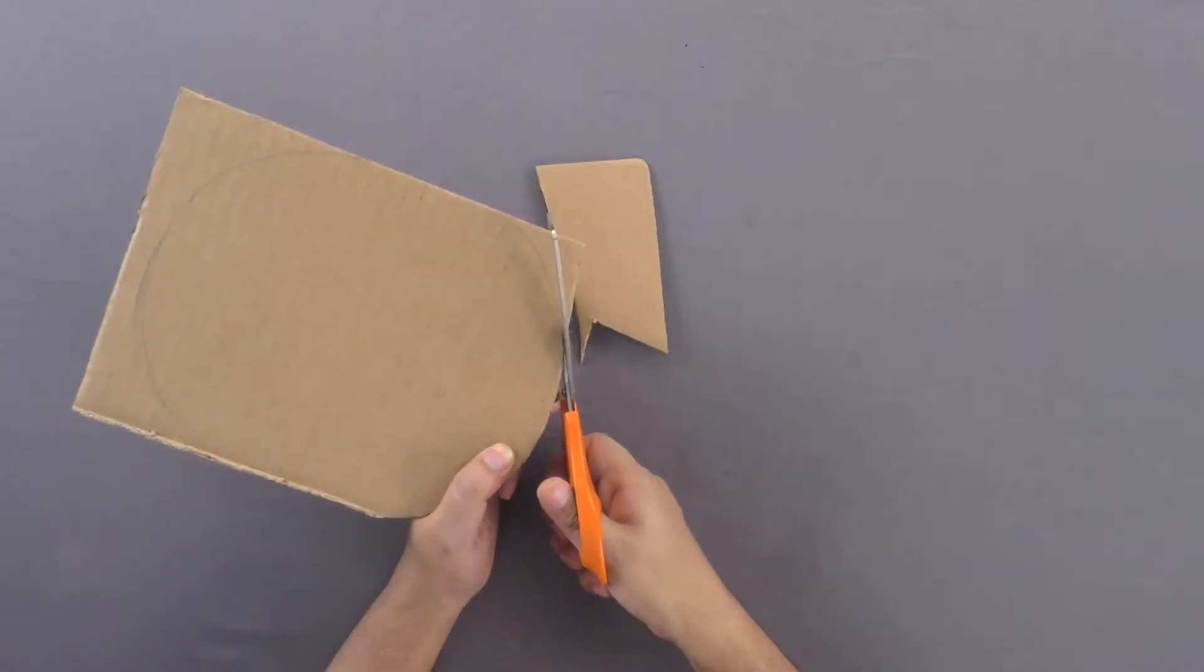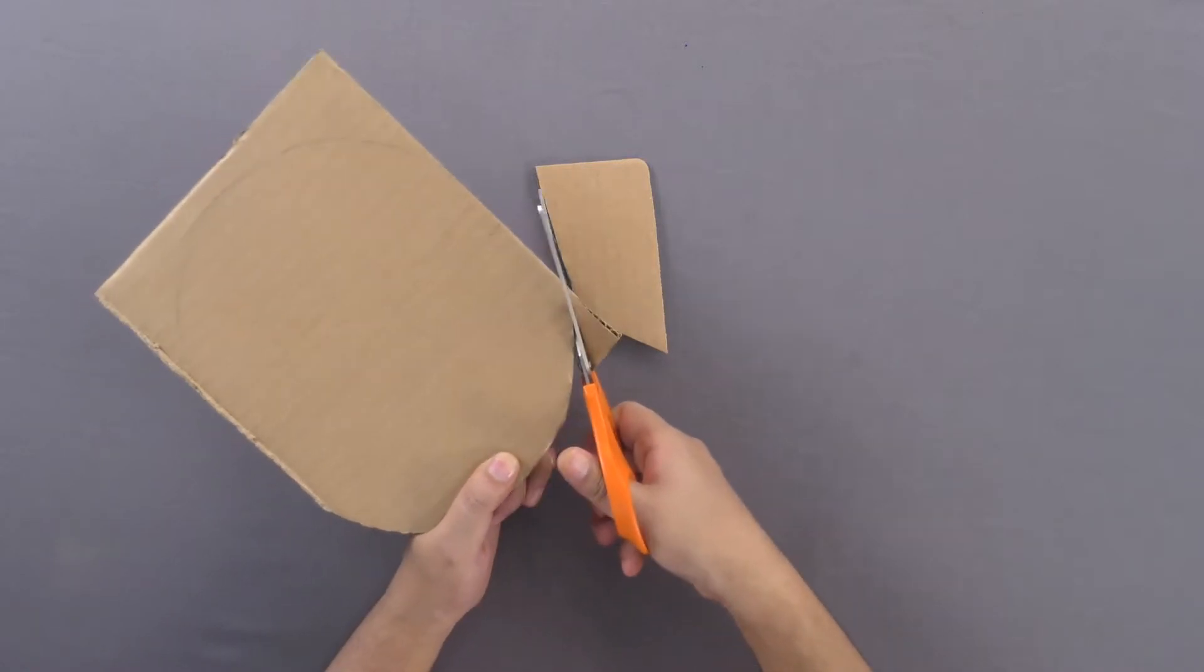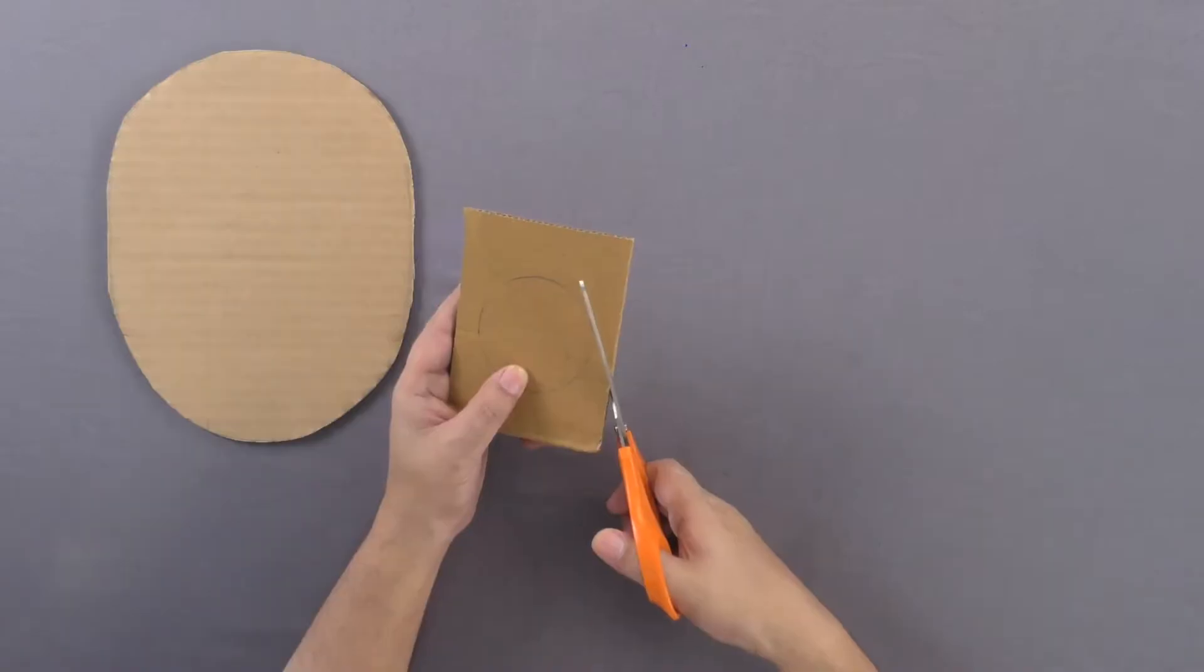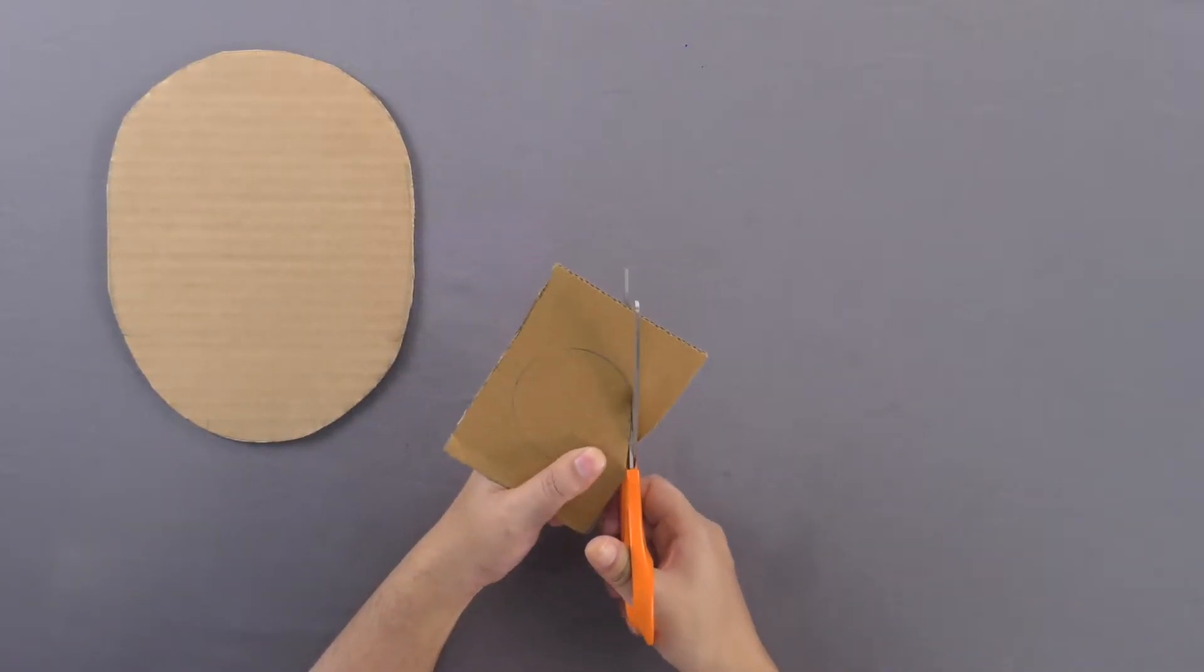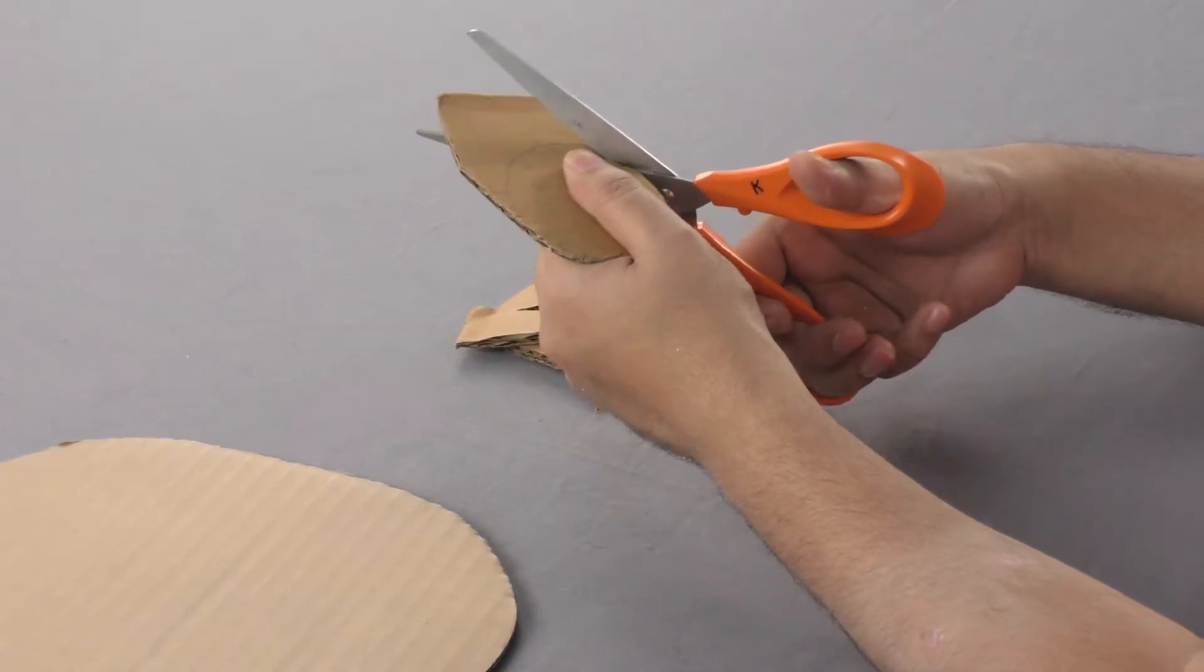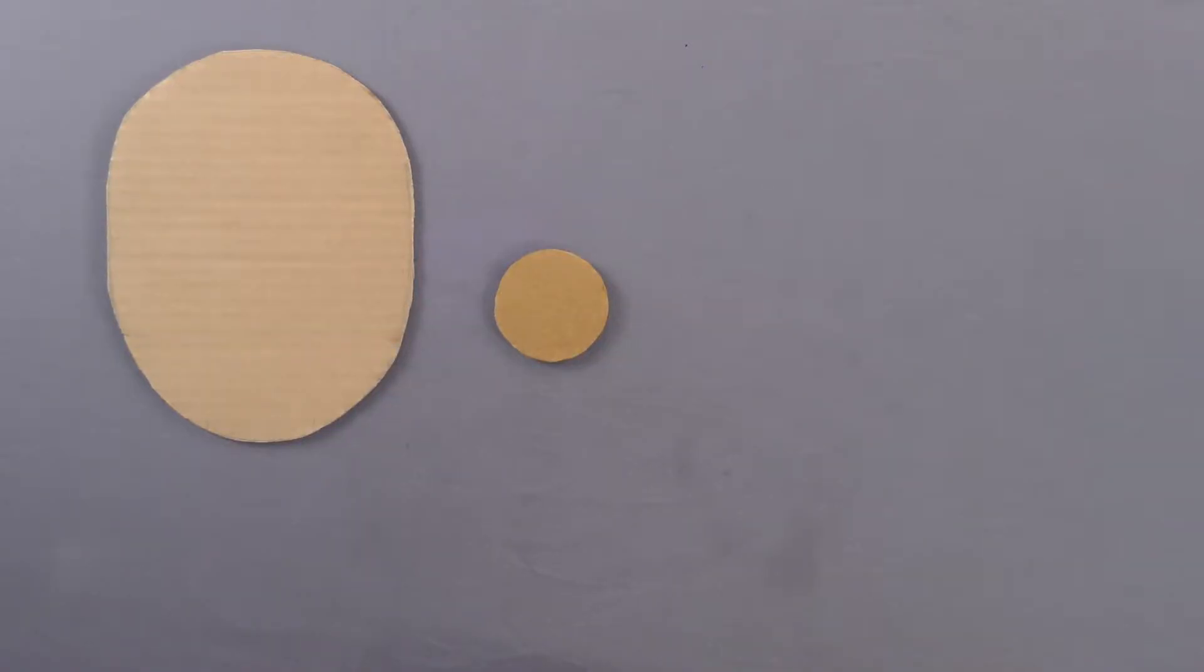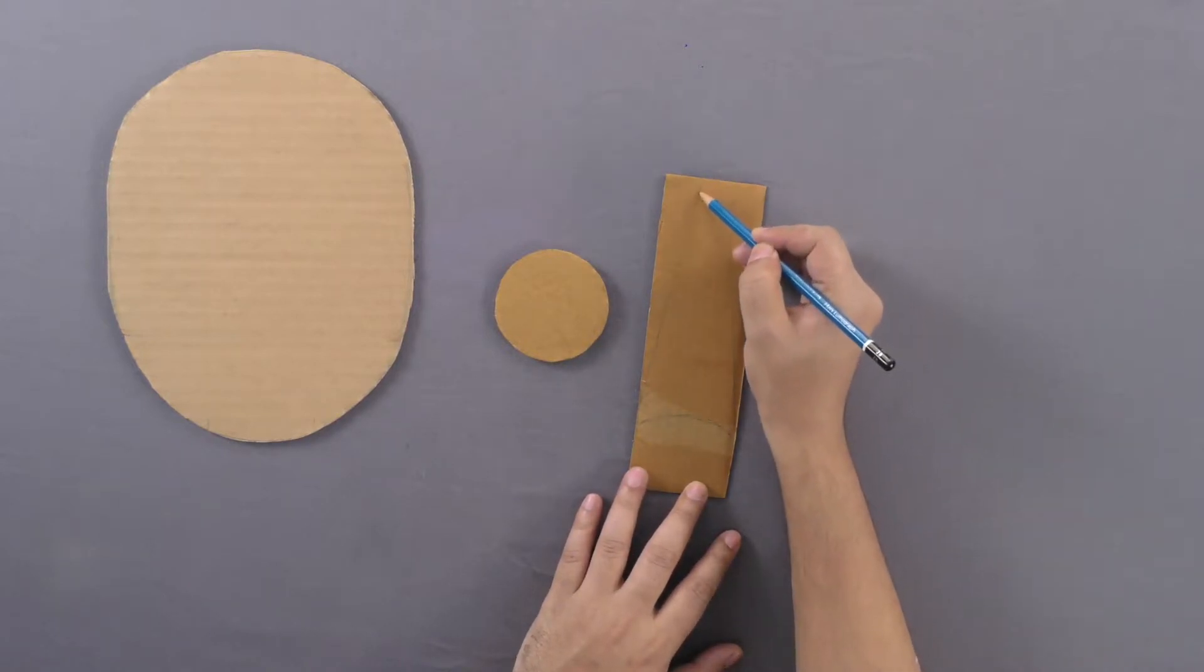Draw straight line markers. Also cut out a smaller circle and a rectangle. Now cut out a triangular nose from the remaining cardboard.